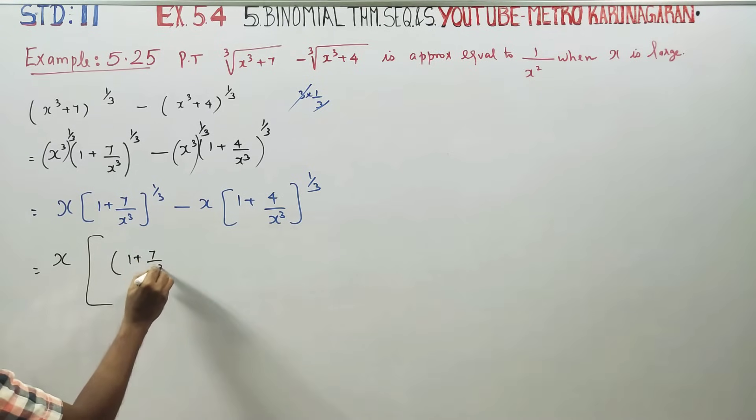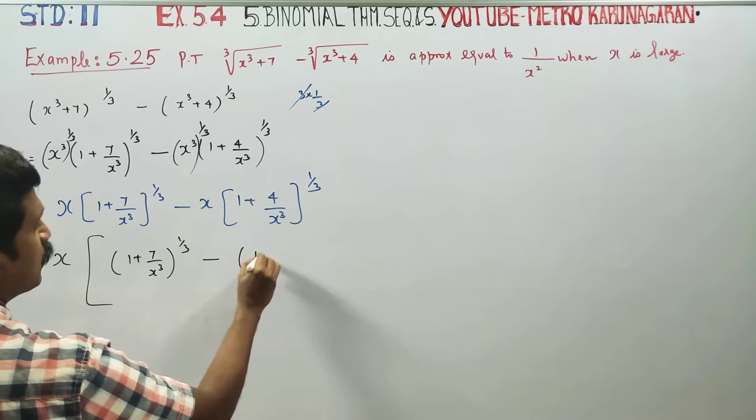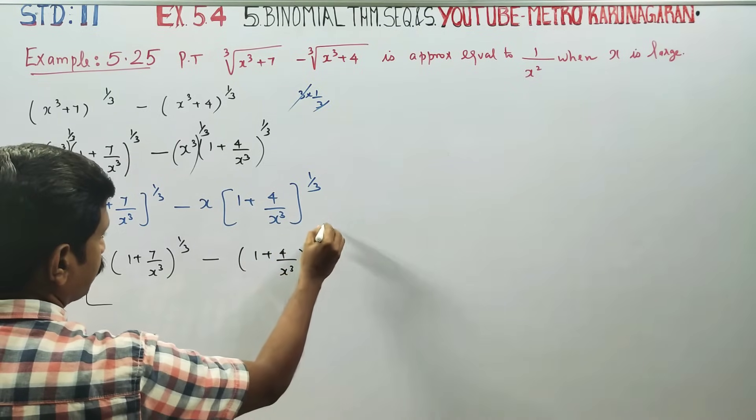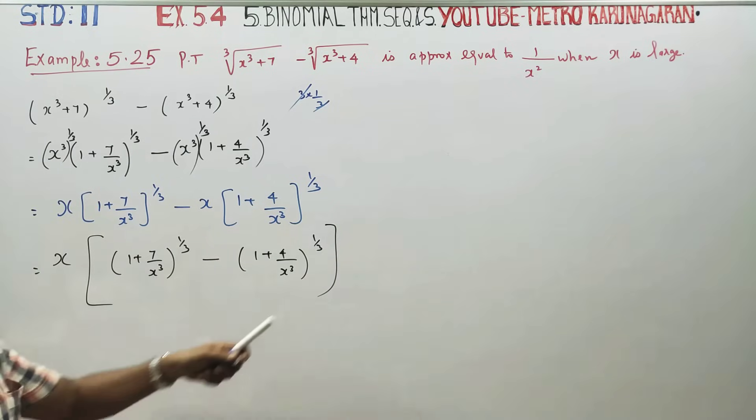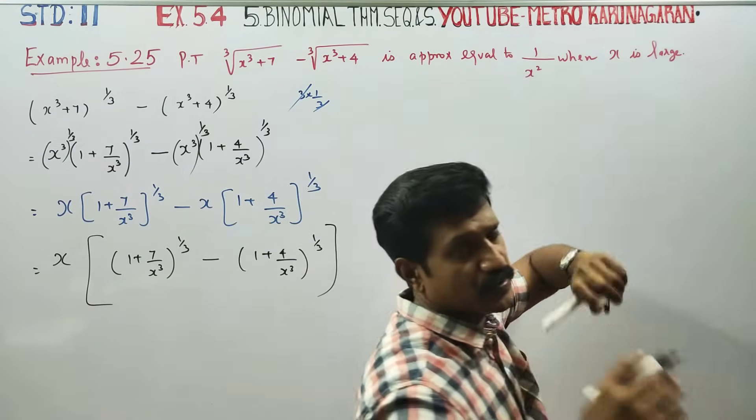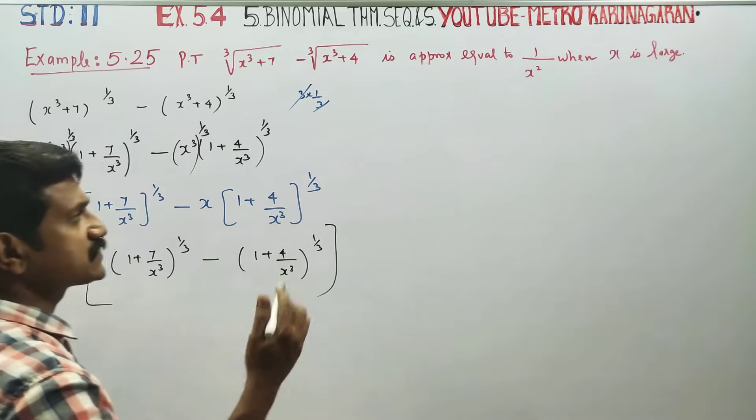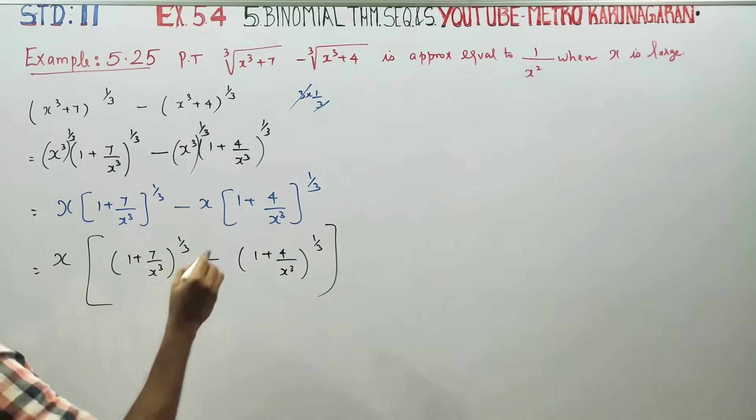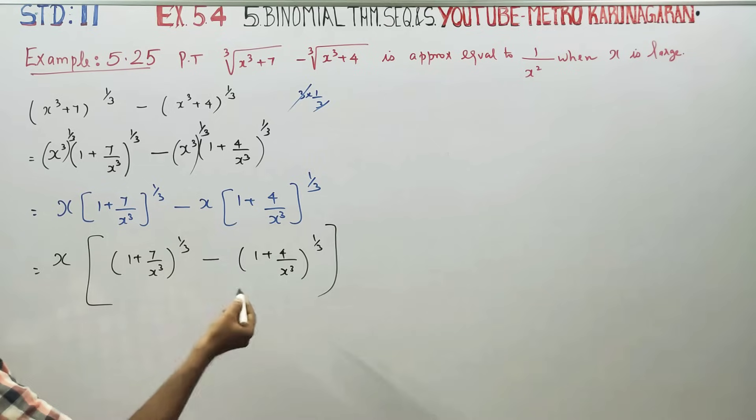Now we have x times [(1 + 7/x³)^(1/3) - (1 + 4/x³)^(1/3)].